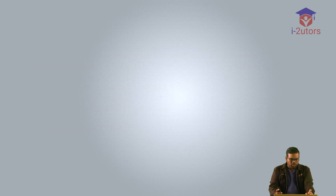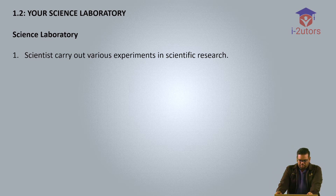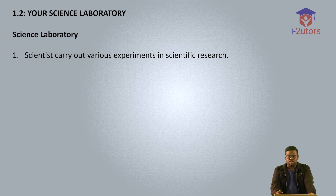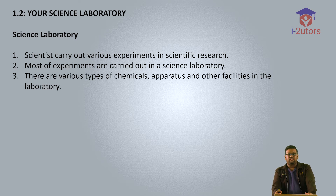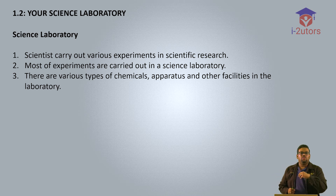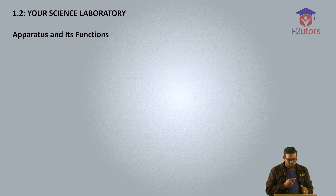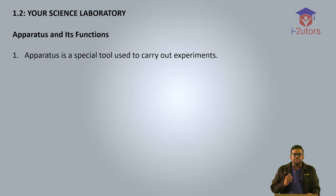That's 1.1. The second topic is about your science laboratory. The lab is used by scientists to carry out various experiments. There are various types of chemicals, apparatus and other facilities in there. You need to know what certain apparatus look like and what their functions are. Apparatus is a special tool used to carry out experiments.